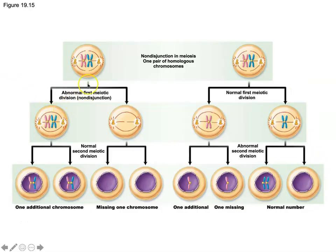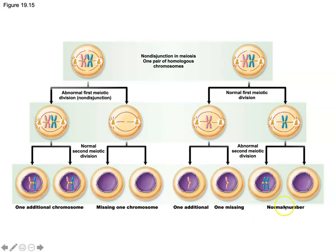If non-disjunction occurs in the first meiotic division, we have two homologous pairs on one side and nothing on the other, so we end up with cells missing a chromosome or cells with one additional chromosome. If we have a normal first meiotic division but an abnormal second meiotic division, two cells will have the normal number of chromosomes, but one cell will have one additional chromosome and one cell will have one missing chromosome.